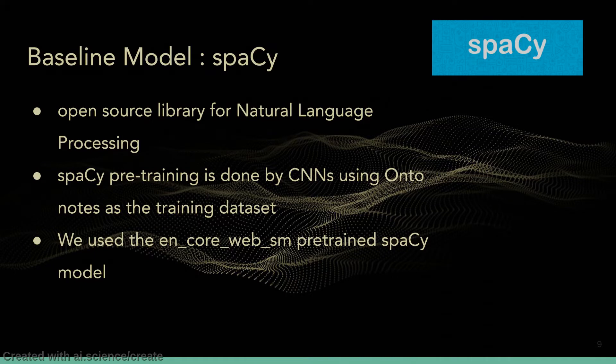We decided to use spaCy as the baseline model. spaCy is an open source library for natural language processing, and it is easy to do fine-tuned training and evaluation. spaCy does not have great documentation about their model, but we know it is pre-trained on OntoNotes using residual CNNs and GloVe embeddings. We used their smallest pre-trained model for convenience.